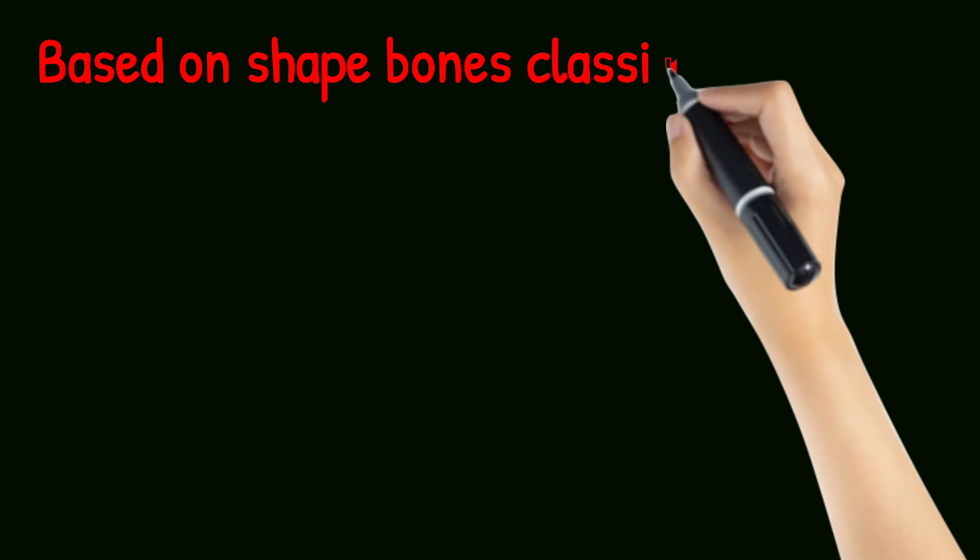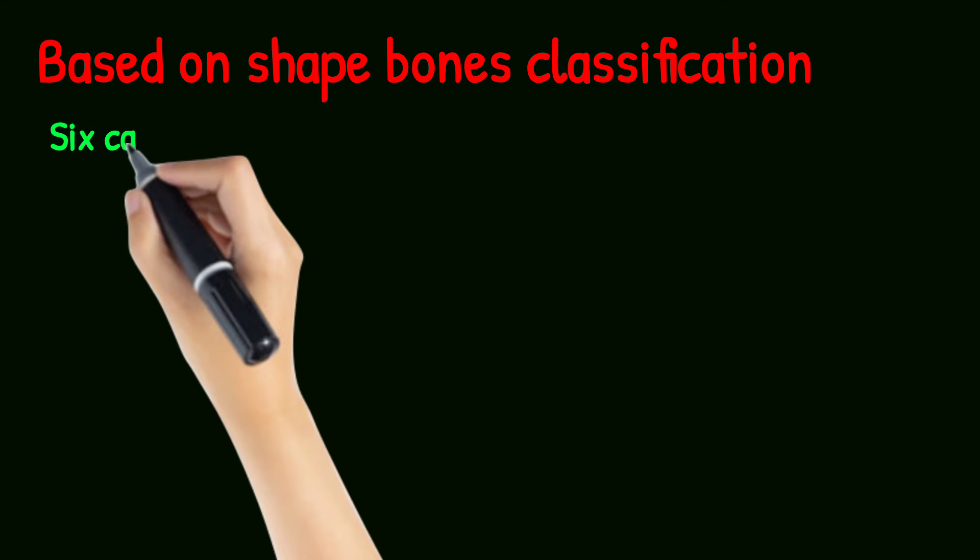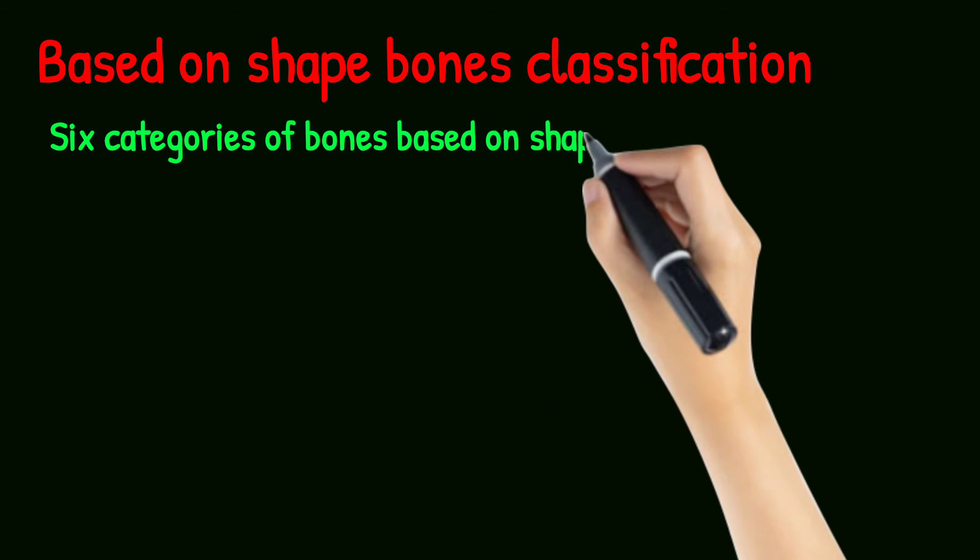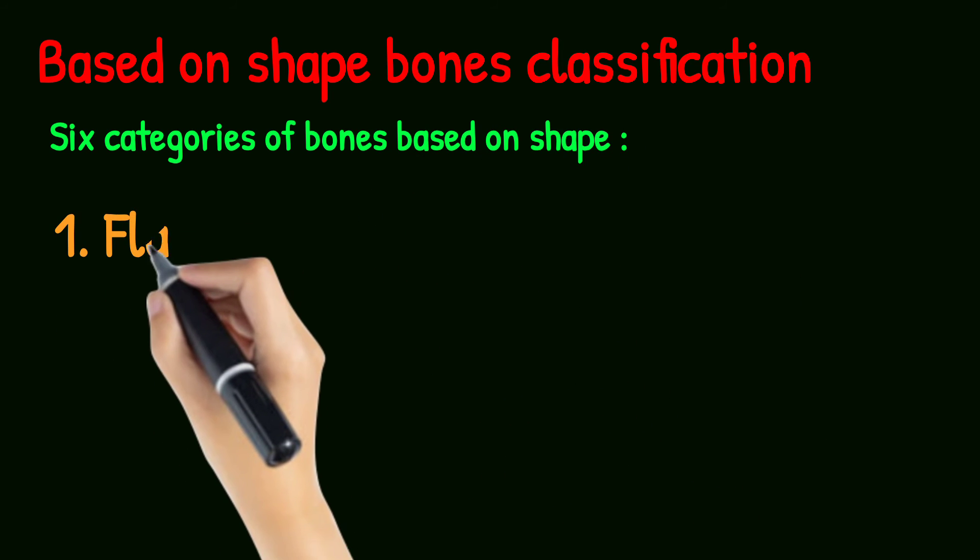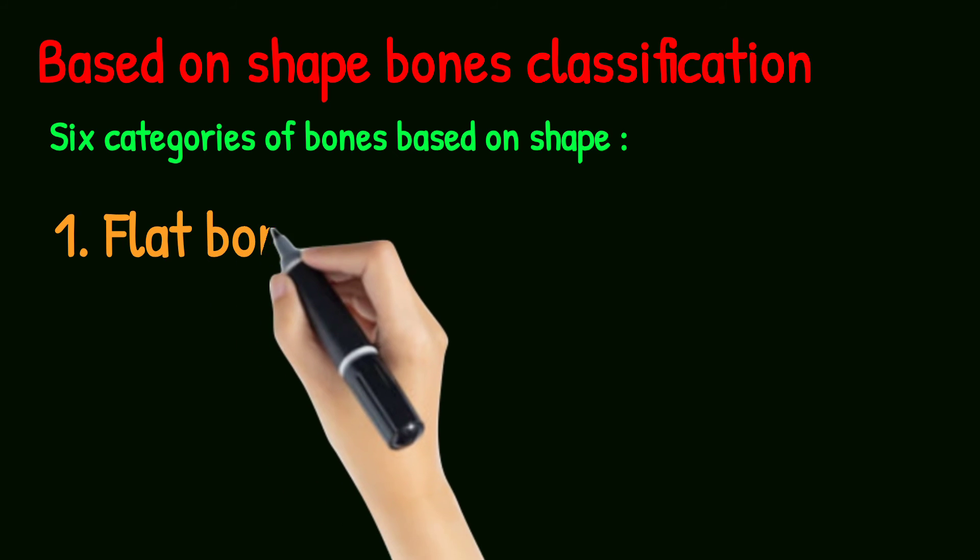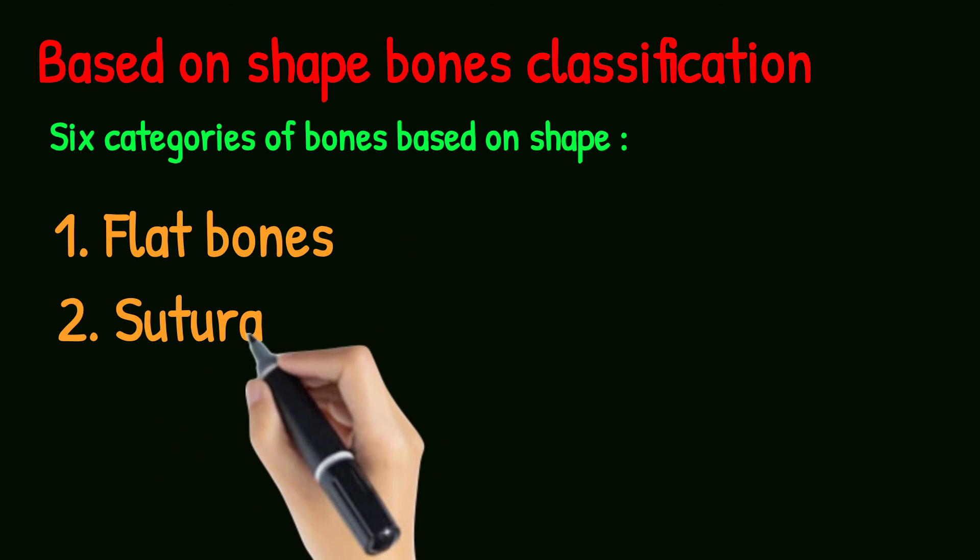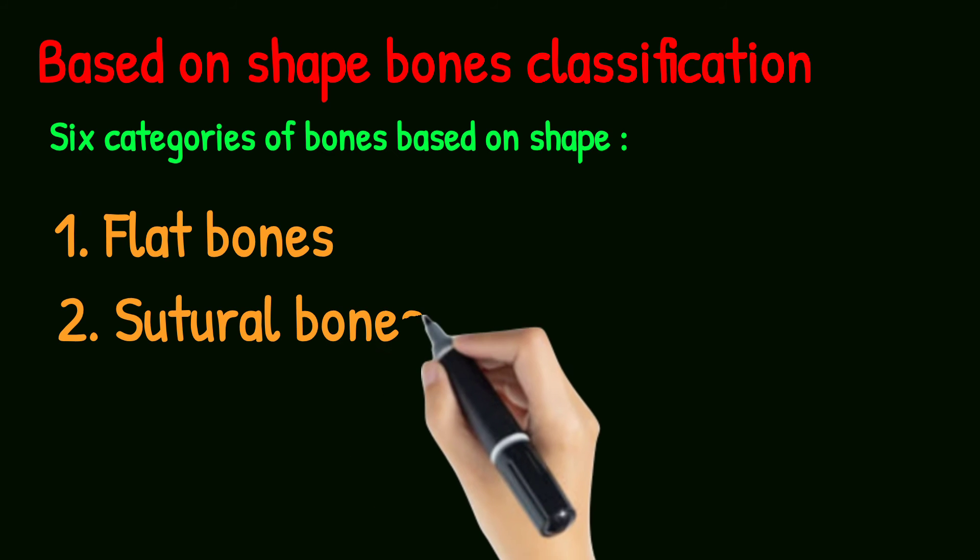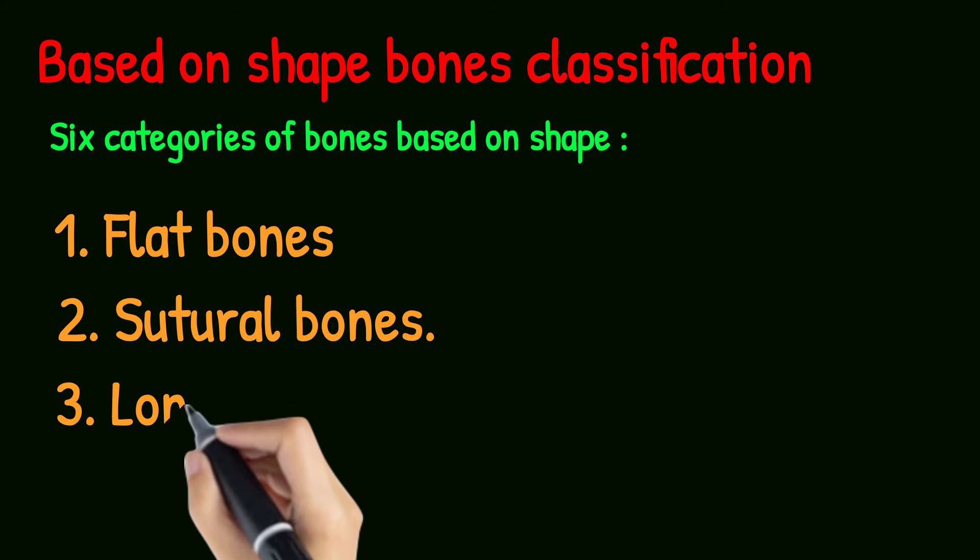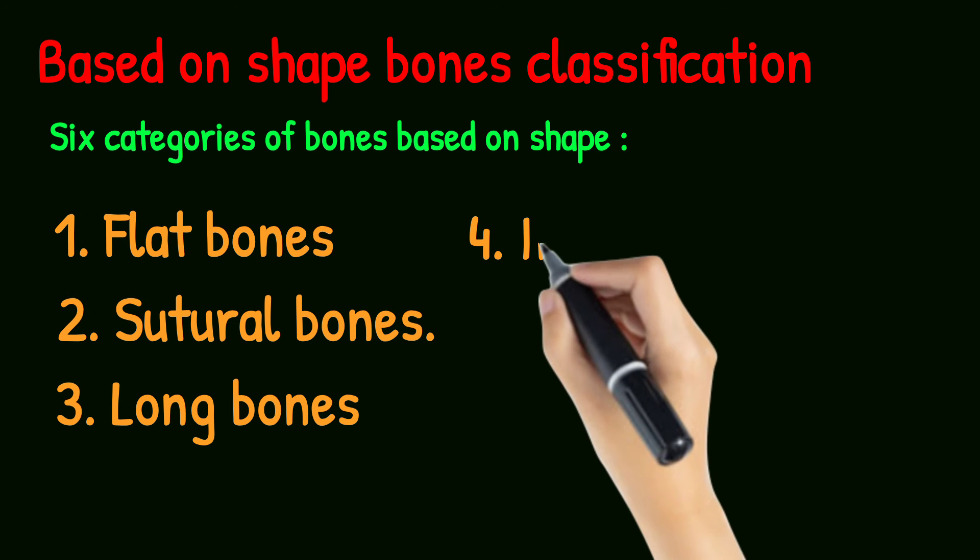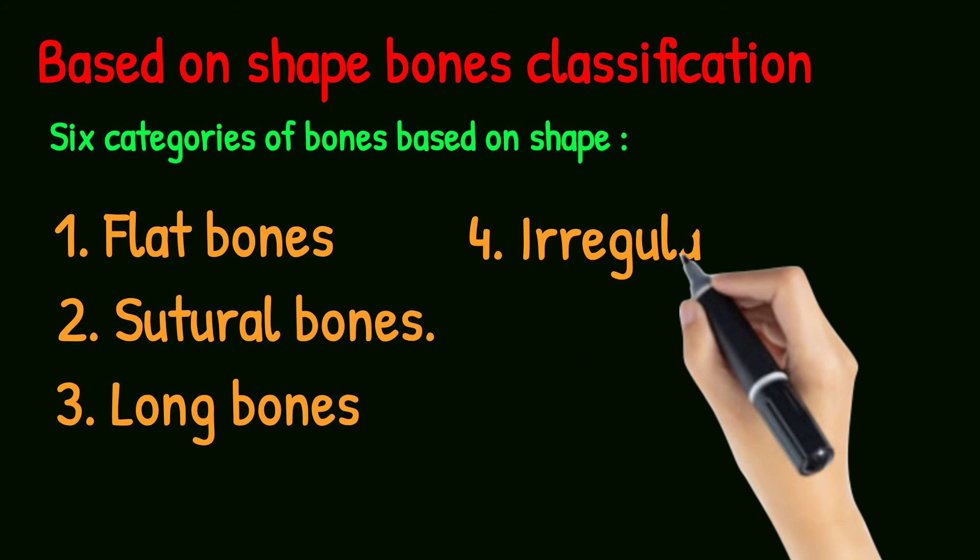Based on shape, bones are classified into six categories, which includes flat bones, short bones, and irregular bones.